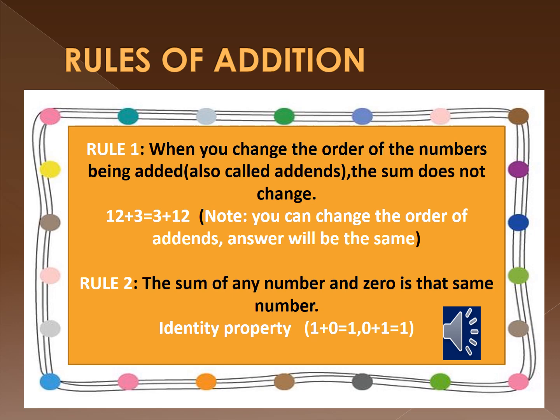Rule 2: The sum of any number and 0 is that same number — this is the identity property. For example, when 1 is added to 0, the answer will be 1; or 0 added to 1, the answer will be the same number, that is 1.